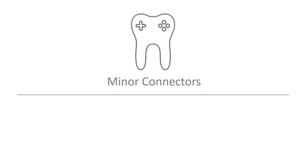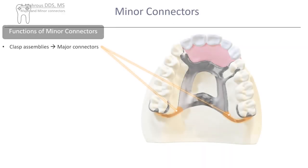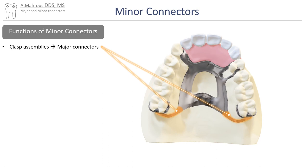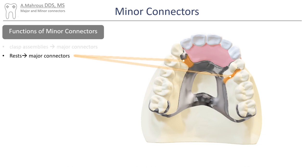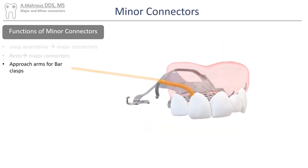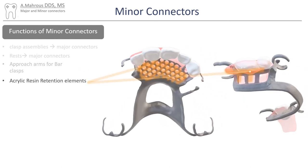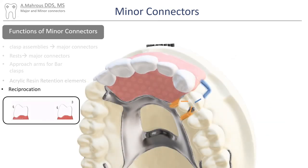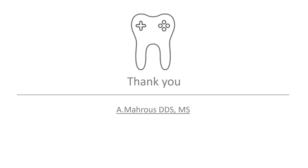Now let's move on to minor connectors and their functions. Minor connectors can connect the major connector to the clasp assemblies or to the rests. They could also be part of the approach arm for bar clasps, or used as an acrylic resin retention element like a meshwork or a lattice. Minor connectors are rigid, and because they are rigid they can provide separation, like this clasp assembly shown here. We hope this was helpful and we'll see you next time in another RPD video.